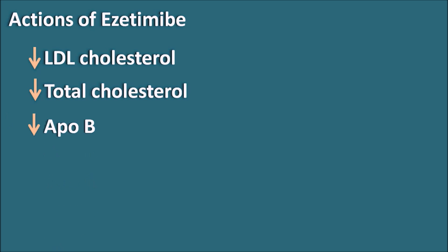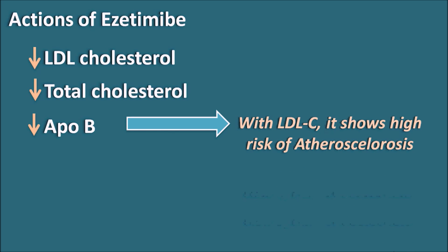Another important action of Ezetimibe is that it decreases Apolipoprotein B. Apolipoprotein B is an important factor which, when associated with LDL cholesterol, may cause a risk for atherosclerosis. Whenever Apolipoprotein B levels decrease, the risk of atherosclerosis is also decreased. So Ezetimibe can decrease Apolipoprotein B levels, thereby decreasing atherosclerosis as well as the risk of heart attacks in patients.